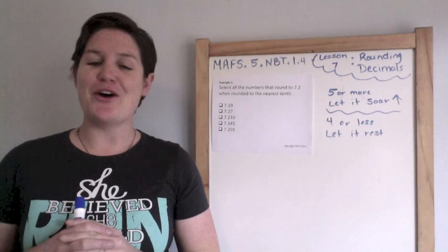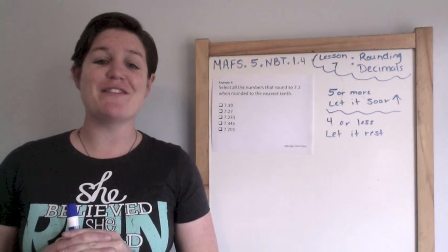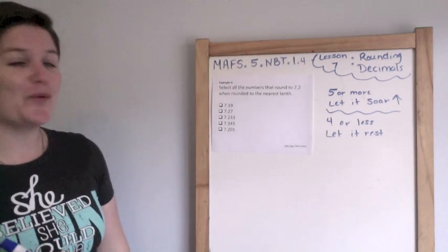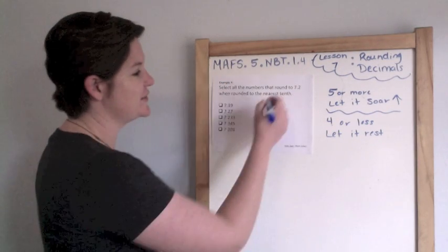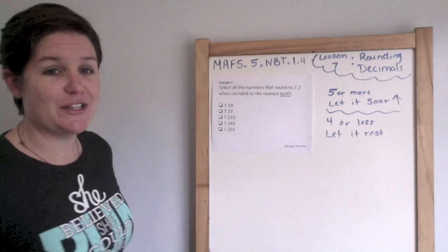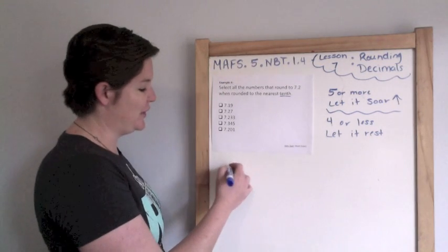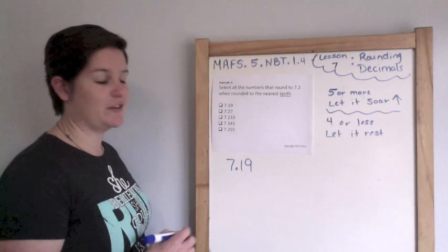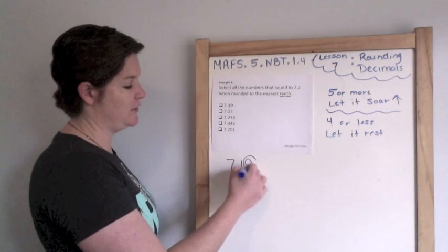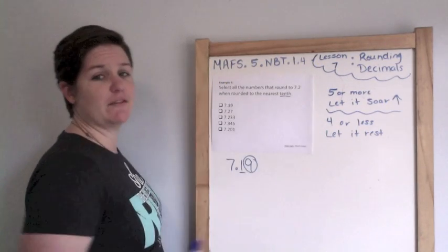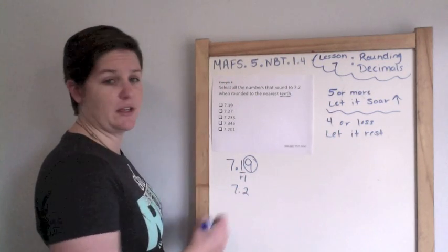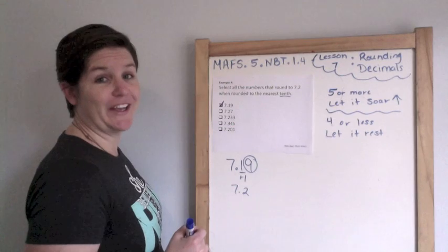Select all the numbers that round to seven and two tenths when rounded to the nearest tenths. So we are going to round to the nearest tenths place. Let's round each number. We have seven and nineteen hundredths when we round to the nearest tenths. We see that it's five or more and we let it soar. So we add one, which would be seven and two tenths. Mark it.